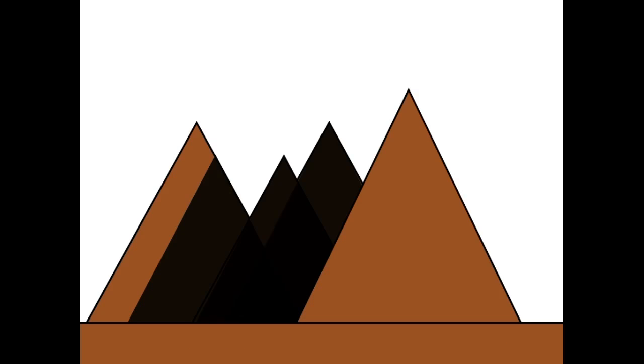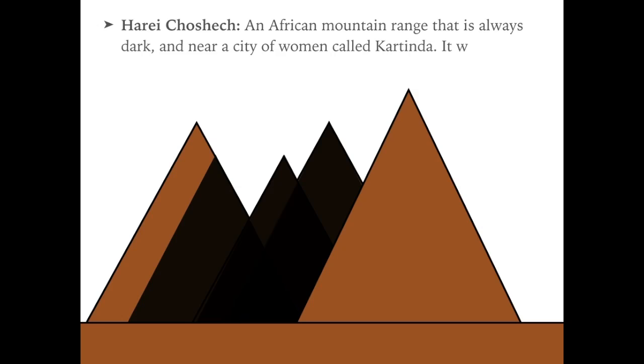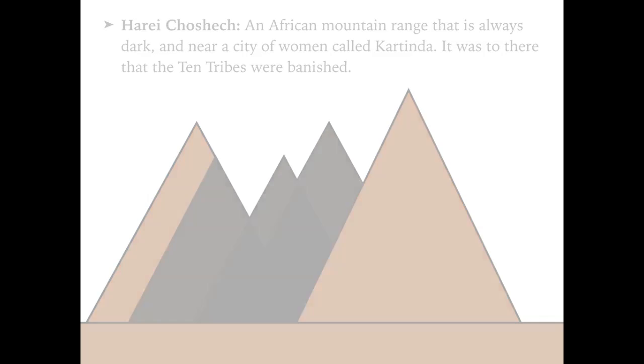The Gemara and Midrash mention a place called the Harei Choshech. We don't know exactly where these mountains are, but we do know several things about them. We know that they're in Africa, that it's always dark due to blocking out the sun all year, and that beyond the mountain range is a city of wise women called Kartinda. We also know that the ten tribes were exiled there. To figure out how it's possible to block out the sun, we need to first understand the trigonometry of the sun and the earth. The solar elevation angle, also called the altitude angle, is the angle of the sun in the sky. This is the arc sine of a bunch of different terms, which we'll examine one by one.